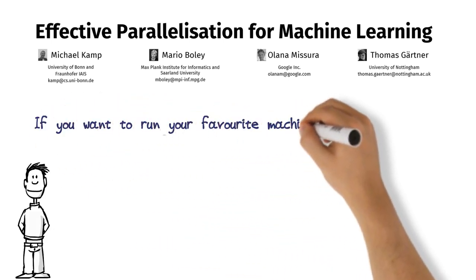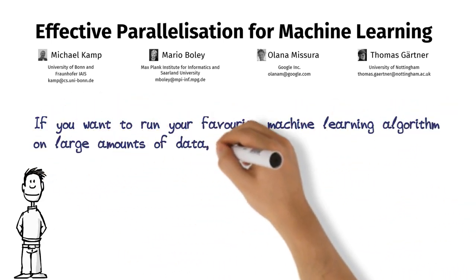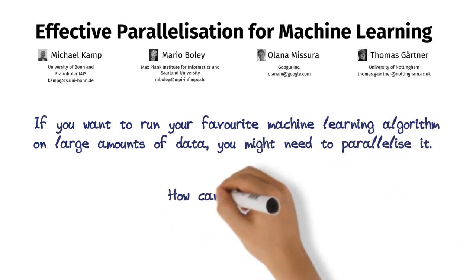If you want to run your favorite machine learning algorithm on large amounts of data, you might need to parallelize it. How can you do that?